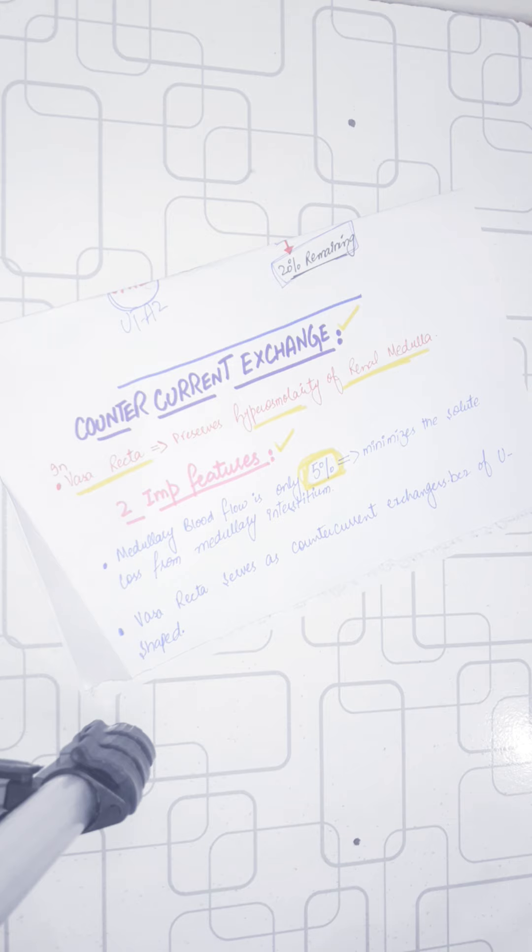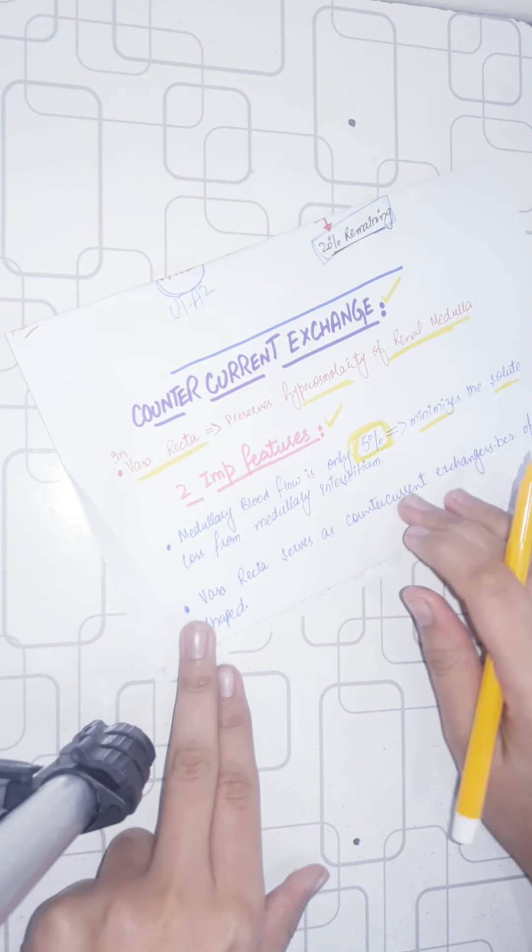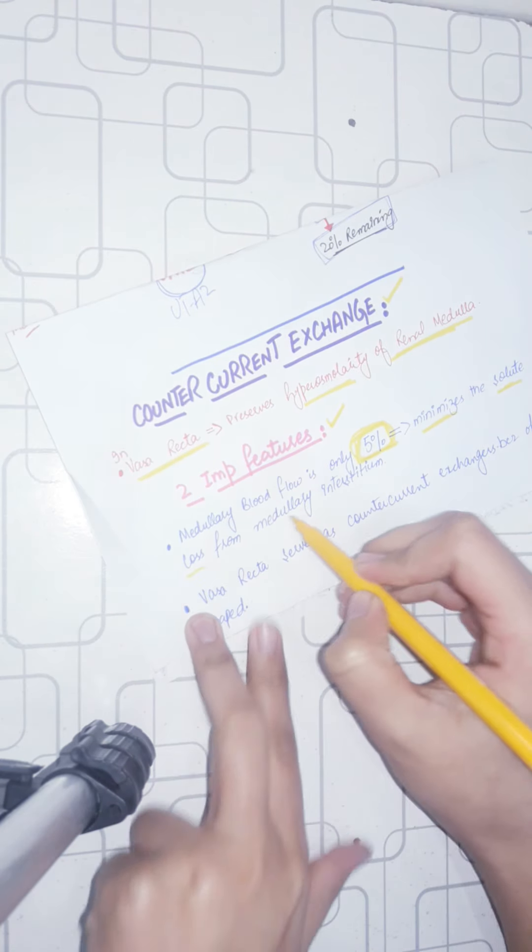And because of the sluggish blood flow, the blood flow is very sluggish. The solute loss is minimized. It minimizes the solute loss from the medullary blood flow.